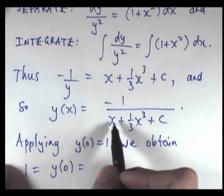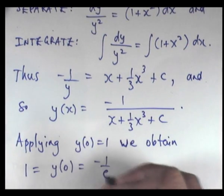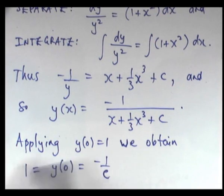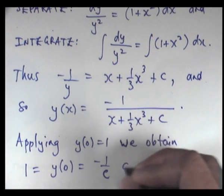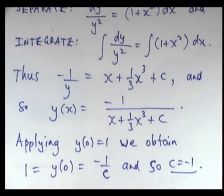So I'm going to get 0 there, 0 there, and just C on the bottom. So if I rearrange this, C's got to be minus 1.